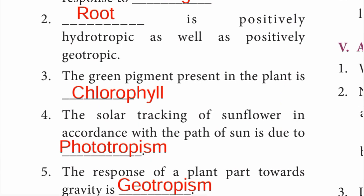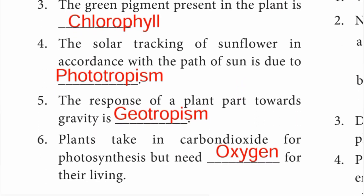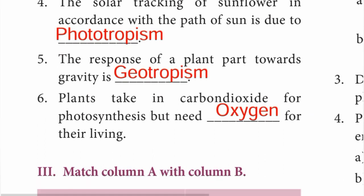Third one: the green pigment present in the plant leaf is chlorophyll. Number four: the solar tracking of sunflower in accordance with the path of sun is due to phototropism. Answer is phototropism. Number five: the response of a plant part towards gravity is geotropism.